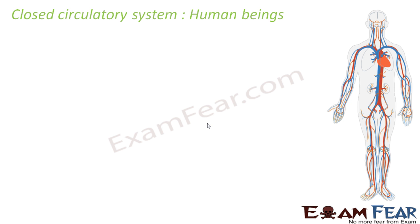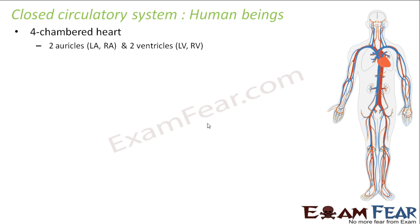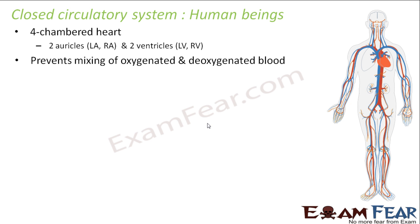In the case of human beings, they have a four-chambered heart. What are the four chambers? Two auricles and two ventricles. This means the oxygenated and the deoxygenated blood can be completely separated both in auricles as well as ventricles. So this prevents mixing of oxygenated and deoxygenated blood, and here also we have double circulation.